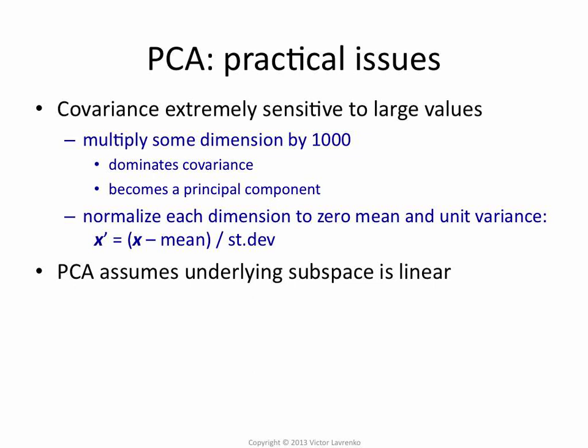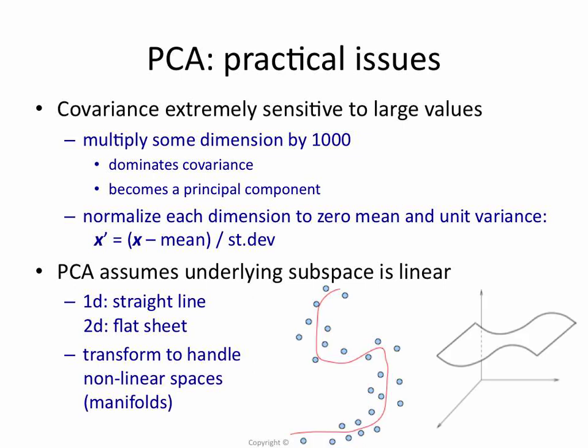That gets around this problem. Another problem which you cannot get around is that PCA assumes the underlying space is linear — in one dimension it's a straight line, in two dimensions it's a sheet. So here you have two-dimensional data that seems to straddle a one-dimensional curve. PCA cannot find a curve; it cannot find a manifold. It will try to find a single direction in which the data has the most variance.